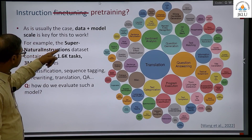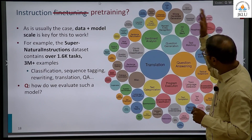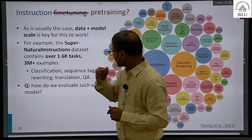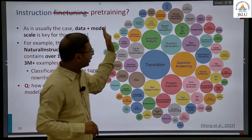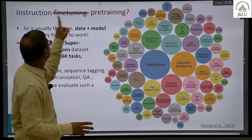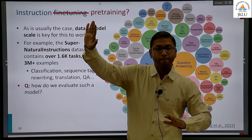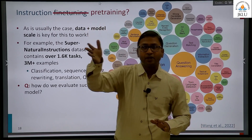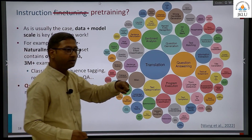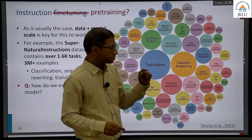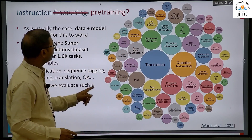Classification, sequence tagging, rewriting, translation, question answering. So how do we evaluate such a model? It is not a task-specific thing anymore. Your pre-training is fine, but your fine tuning is not task-specific. Pre-training was on the language modeling objective, and fine tuning was on one of these tasks — you take the pre-trained network and fine tune on this task, fine tune on that task, and so on. But now we are doing something else — what is instruction pre-training? Pre-training on everything basically. Language modeling is one of these tasks.